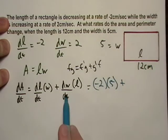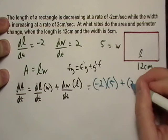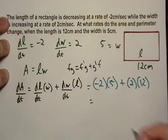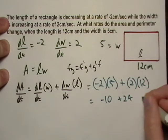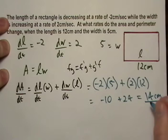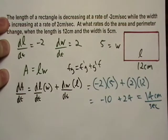Plus dw, that's two, times the length, well that's twelve. So you have negative ten plus twenty four, which gives you fourteen, and we're in centimeters per second.